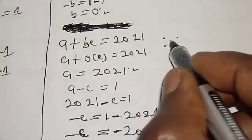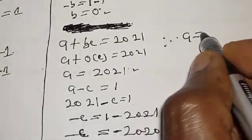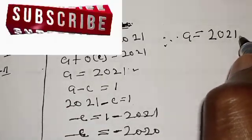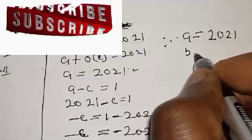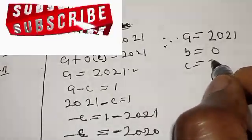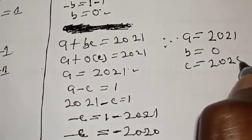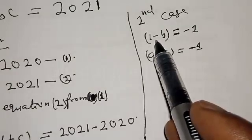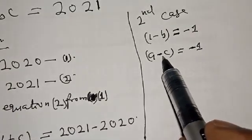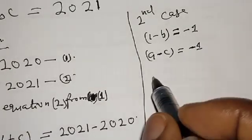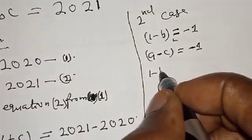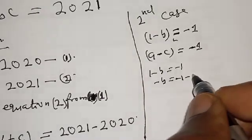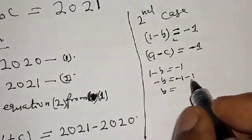Therefore, from the first case: A equals 2021, B equals 0, and C equals 2020. Now let's solve the second case. We have 1 minus B equals minus 1, and A minus C equals minus 1. From 1 minus B equals minus 1: minus B equals minus 1 minus 1 equals minus 2, so B equals 2.